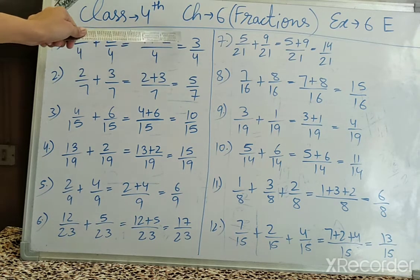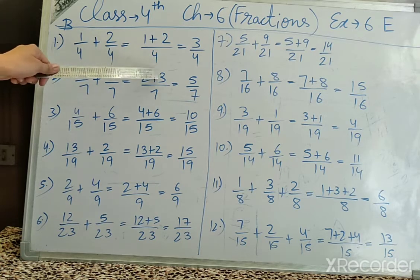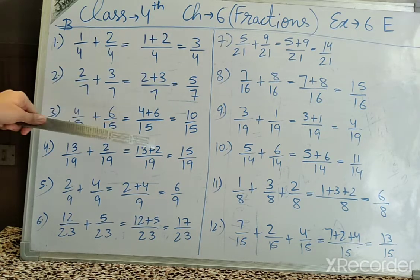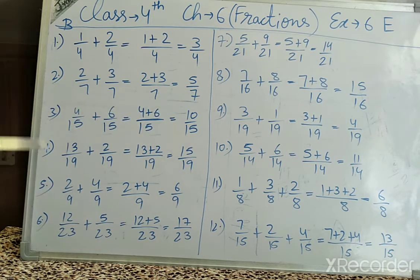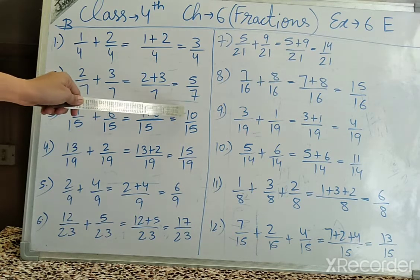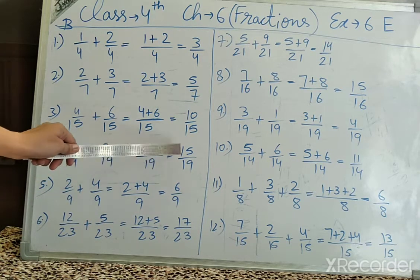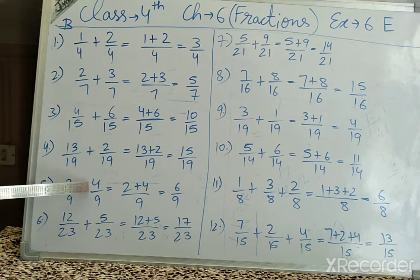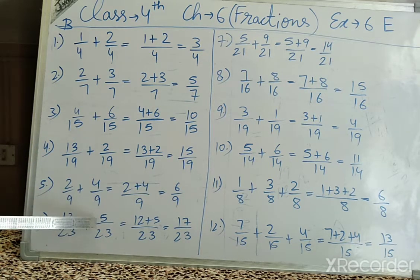Like 1 plus 2 is 3, so this is 3 upon 4. Similarly 2 upon 7 plus 3 upon 7 — it will become 5 upon 7. The bottom number stays the same and we add the top numbers. 4 upon 15 plus 6 upon 15 gives 10 upon 15. 3 upon 19 plus 2 upon 19 gives 5 upon 19. 2 upon 9 plus 4 upon 9 gives 6 upon 9. 12 upon 23 plus 5 upon 23 gives 17 upon 23.